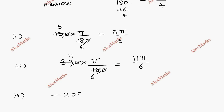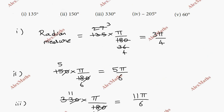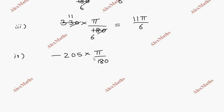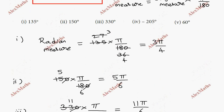For the next subdivision, minus 205 degrees. So minus 205 into π/180. The 5 table cancels — 5 divides into both. After simplification, the answer is minus 41π/36 radians.